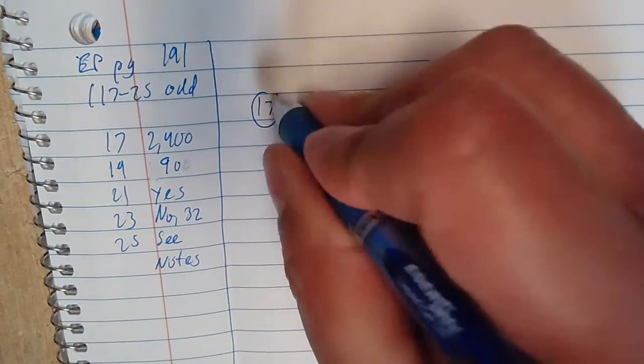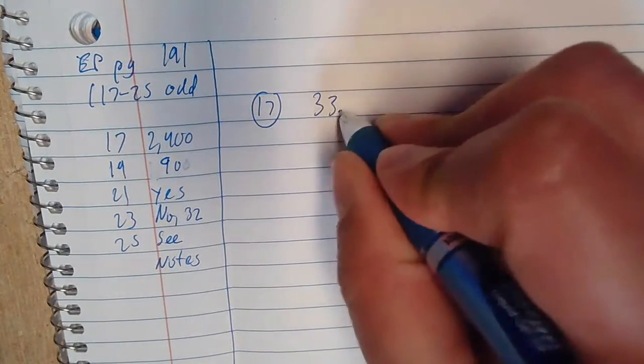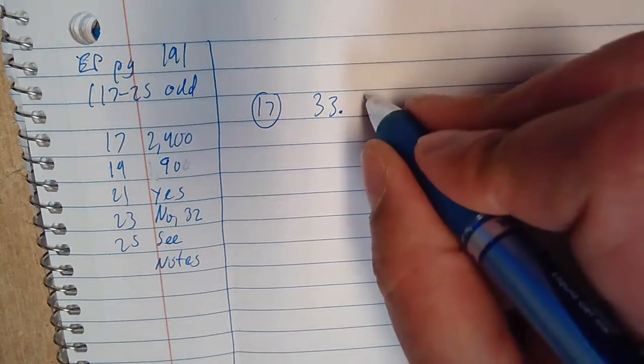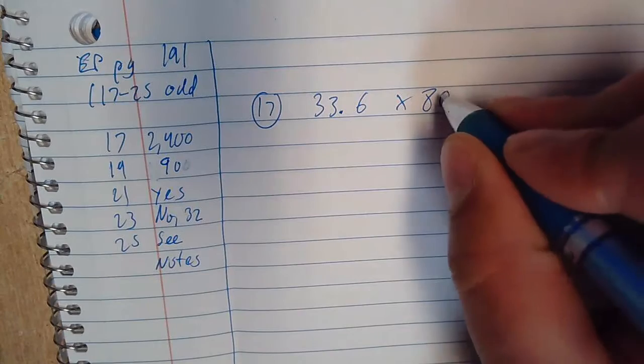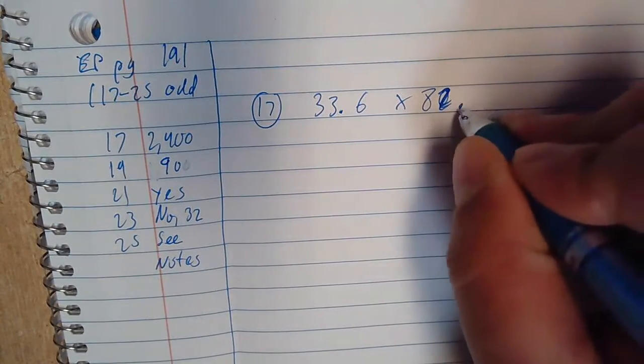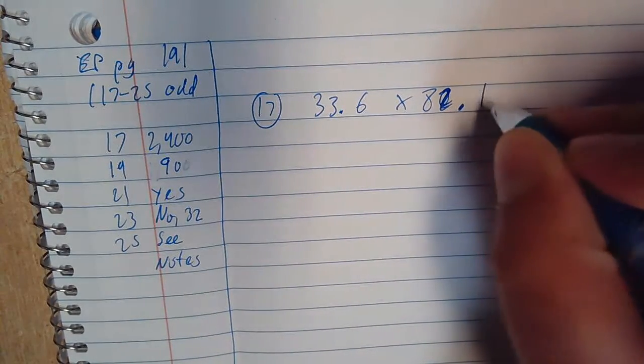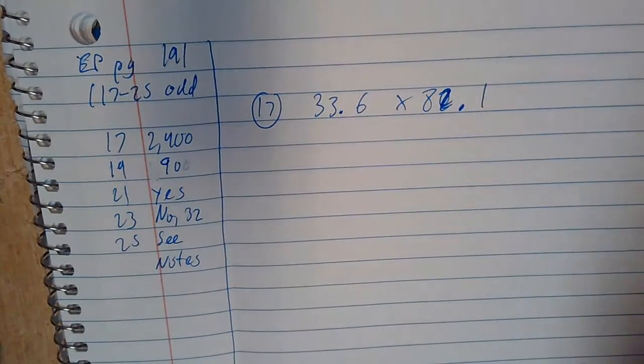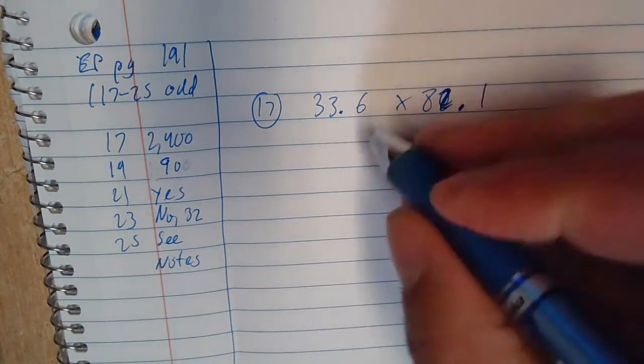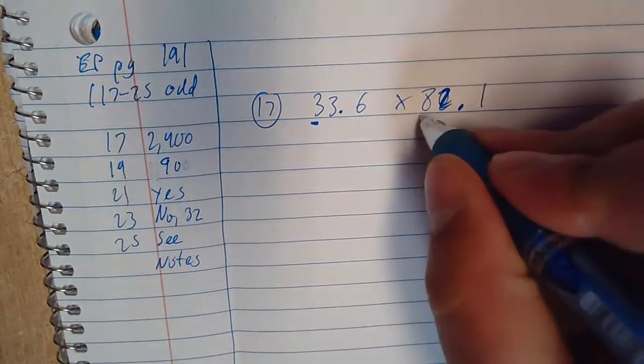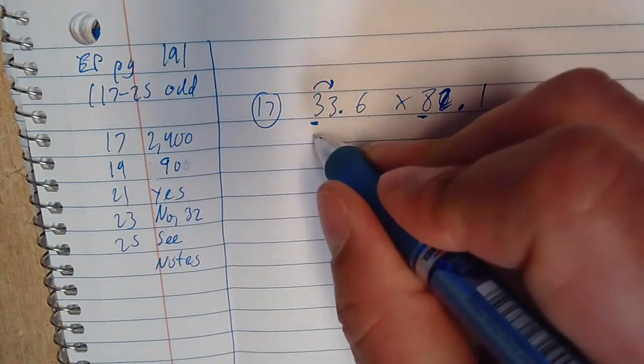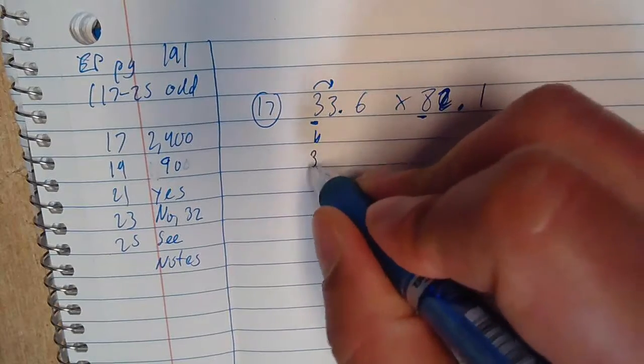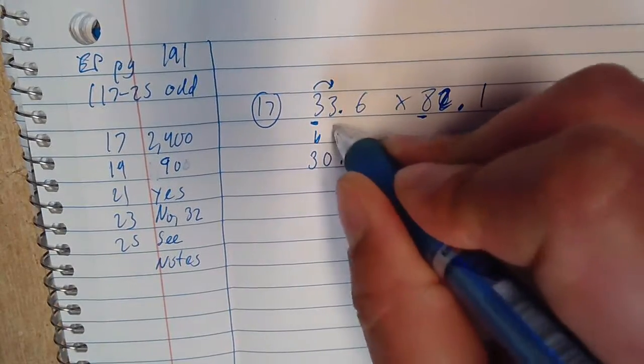So here we go, number 17. Let's do this. You have 33.6 times 80. You saw what I did there, right? I was already doing the math in my head, so I apologize for the sloppiness. 10th place, 10th place. This stays the same. This becomes 30.